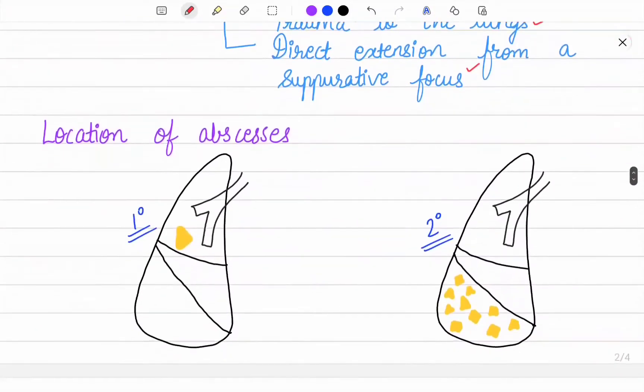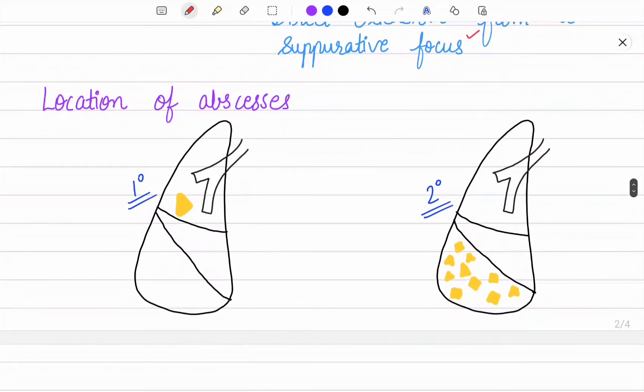Next is the location of abscesses. Primary lung abscesses are mostly single, large, commonly due to aspiration, and located most frequently in the lower part of the right upper lobe or apex of the right lower lobe. Secondary lung abscesses are mostly multiple, small, most commonly post-pneumonic or following septic embolism, and located in the lower lobe.